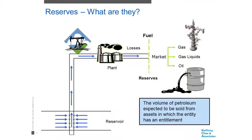We look at how we can lift that — our lift systems, pumps, up-hole, down-hole, all sorts of different mechanisms. We may well have facilities, a plant where we'll have some losses, so we need to take those losses out of what we can sell. We may well be using some of our gas as fuel — we generally take that out of our reserves. At the end of the day, what we want to tell the market is this is what we have economically available to sell.